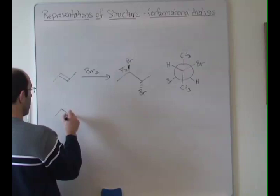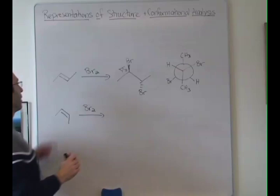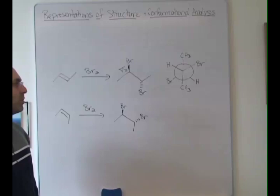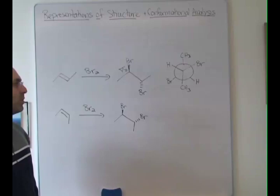The final thing I'll leave you with: if you run this reaction on the other isomer of an alkene — so this was the trans isomer, this is a cis isomer — you would get that product. What I'd like you to do is draw the Newman projection of this and then convince yourself, based on looking at the Newman projections, that these two things are different molecules. They're isomers of each other, but different molecules. So practice that, and we'll pick this up again in class tomorrow.